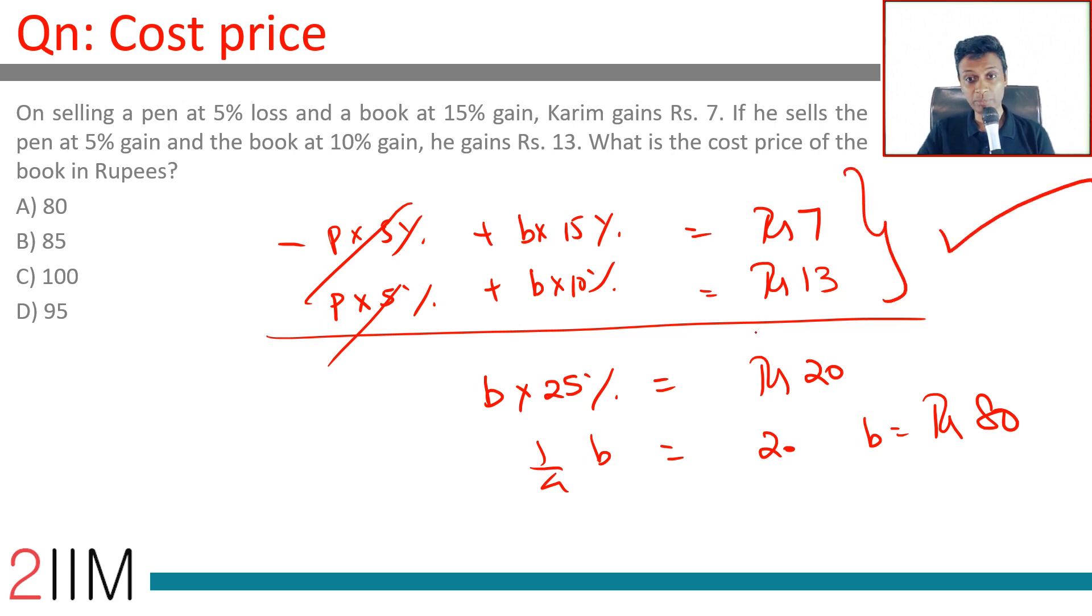We are through. The 5% loss and 5% gain from the pen's point of view, they just get cancelled. If you add up the remaining, you can manipulate and get to the price of book.